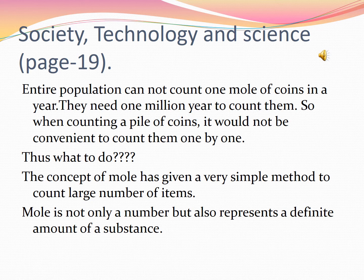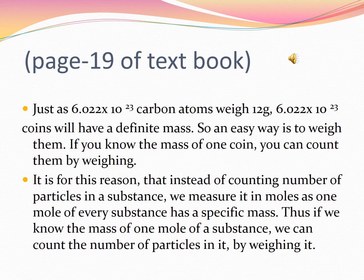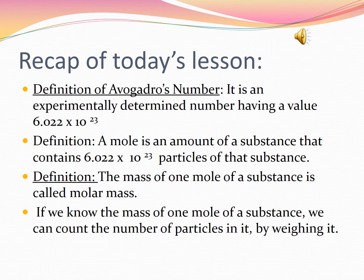The entire world population cannot count one mole of coins in a year — they would need about one million years. So counting a pile of coins one by one is not convenient. The concept of mole gives a simple method to count large numbers of items. Mole is not only a number but also represents a definite amount of a substance. Just as 6.022 × 10²³ carbon atoms weigh 12 grams, 6.022 × 10²³ coins will also have a definite mass. If you know the mass of one coin, you can count them by weighing. Similarly, if we know the mass of one mole of a substance, we can count the particles in it by weighing.